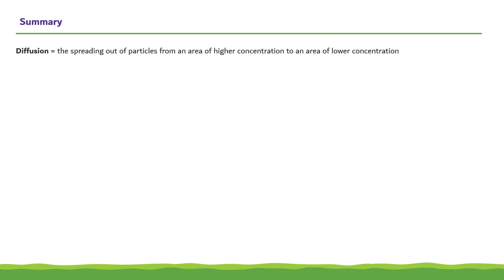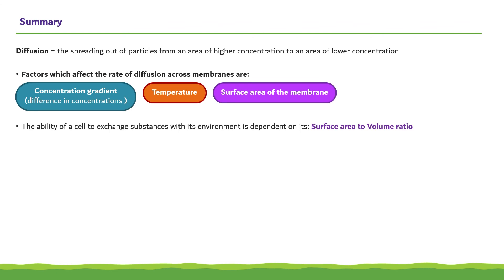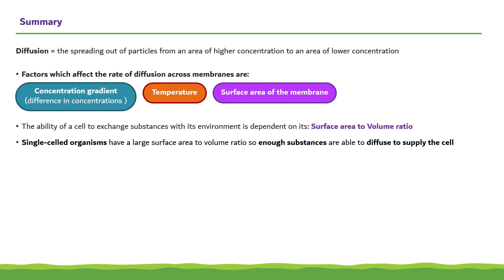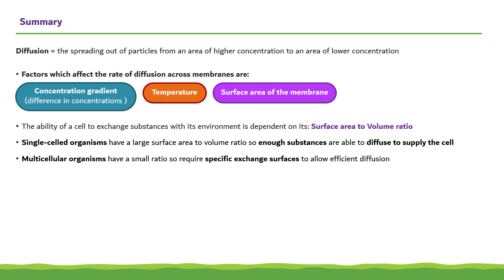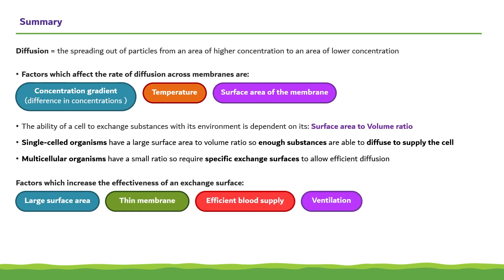In summary, diffusion is the spreading out of particles from an area of higher concentration to an area of lower concentration. The factors which affect the rate of diffusion across membranes are the concentration gradient, temperature, and surface area of the membrane. The ability of a cell to exchange substances depends on its surface area to volume ratio. Single-celled organisms have a large ratio and can supply their needs by diffusion alone, whereas multicellular organisms require specific exchange surfaces. The examples covered include the small intestine and lungs in humans, gills in fish, and leaves in plants.